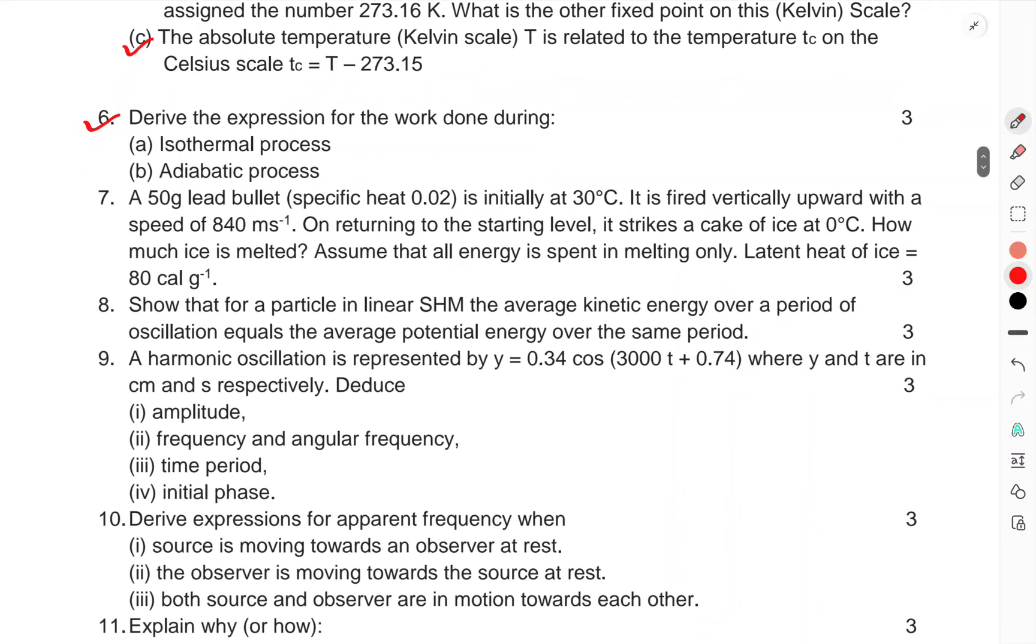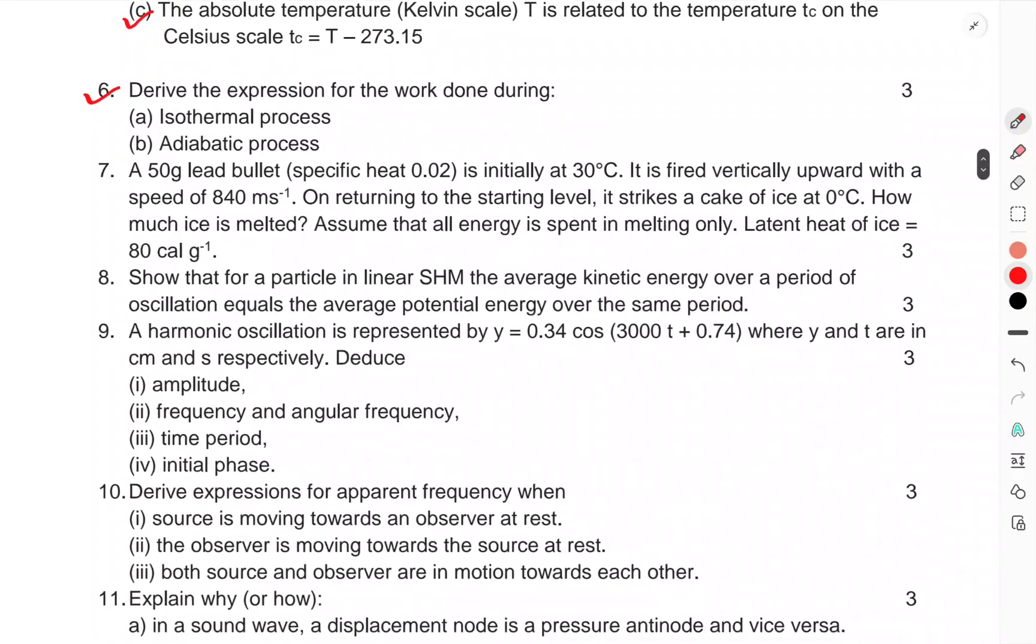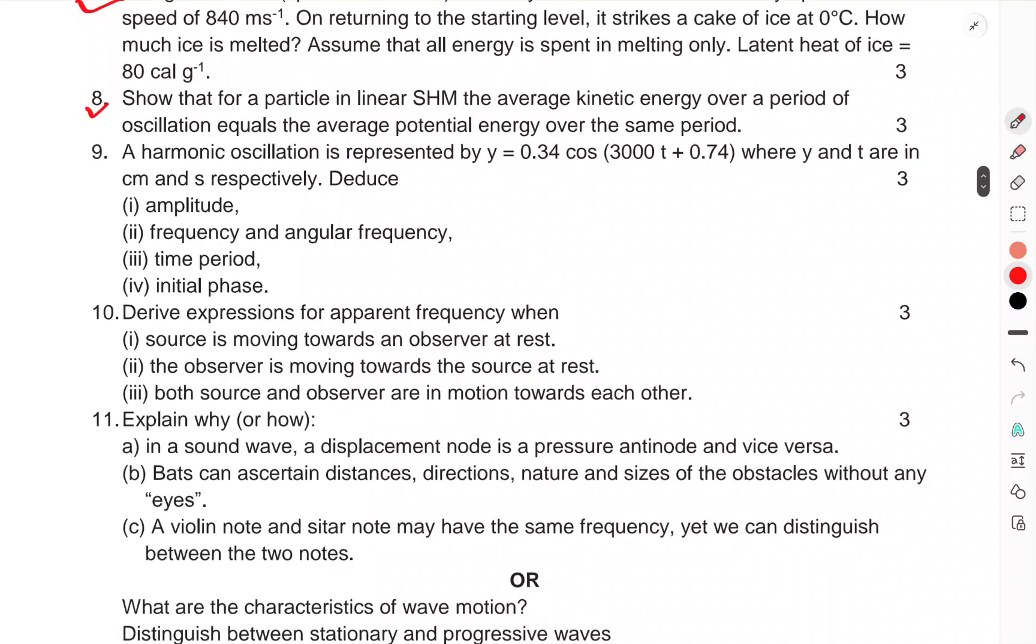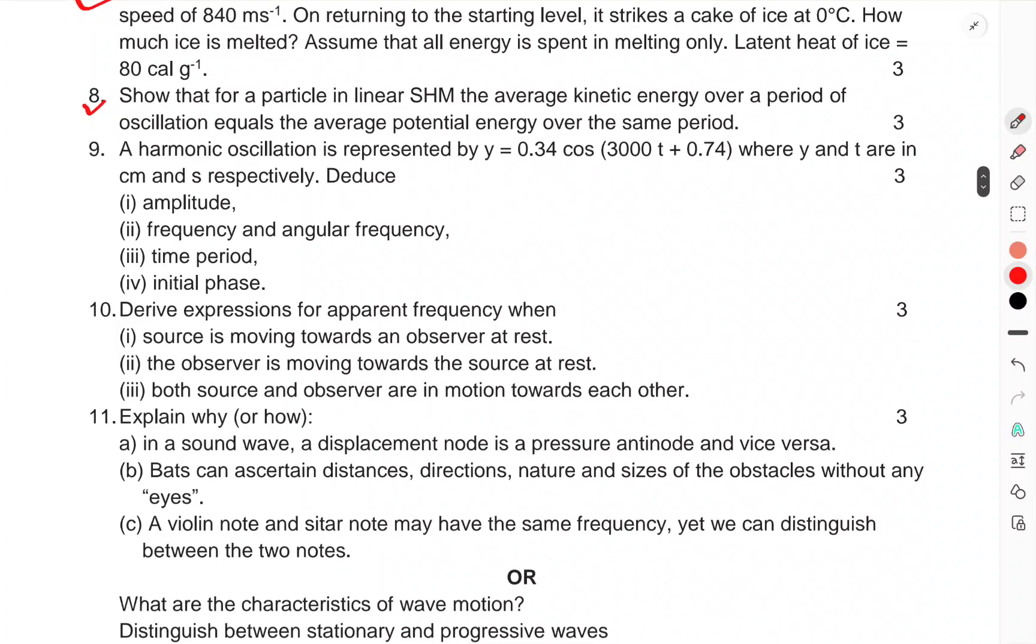Question 6, derive the expression for work done during isothermal process and adiabatic process. Question 7, a 50 gram lead bullet was initially at 30°C, fired vertically upward with a speed of 840 m/s. On returning to the starting level, it strikes a cake of ice at 0°C. How much ice is melted? Assume that all energy is spent in melting only. Latent heat of ice is given.